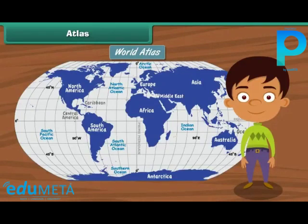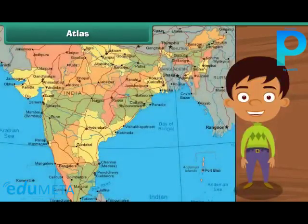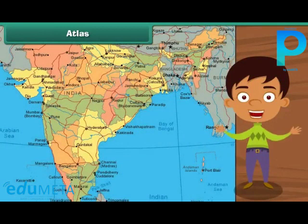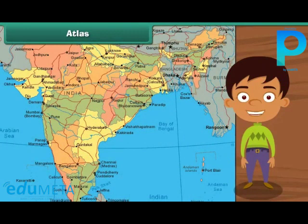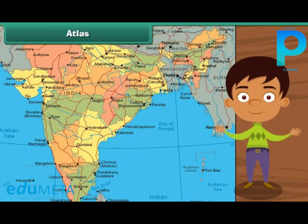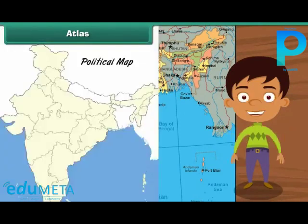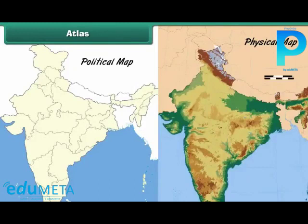An atlas is a collection of maps and charts. The maps in an atlas give the geographical information about different parts of the world. The charts in an atlas contain details of specific locations such as population, sea levels, crops produced, etc. Maps are of two types: political and physical. Let us learn about them in detail.